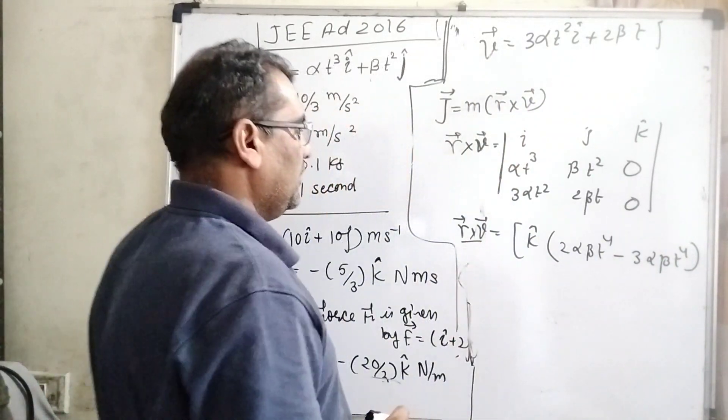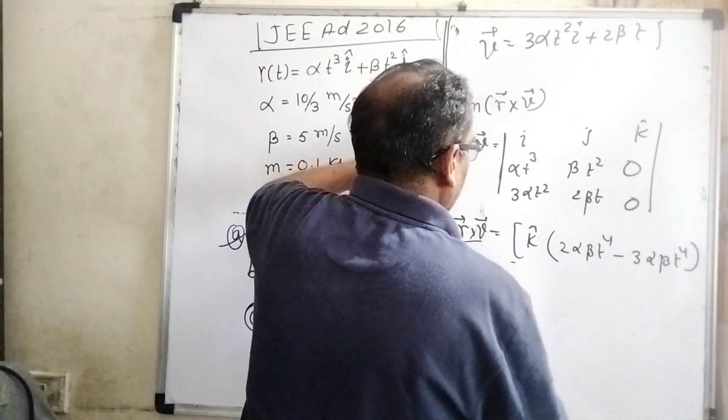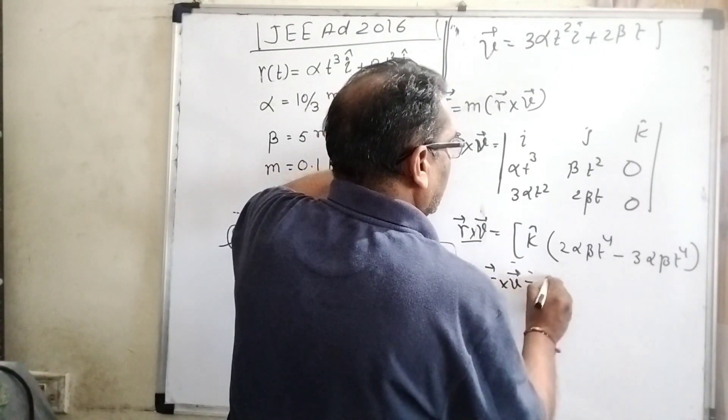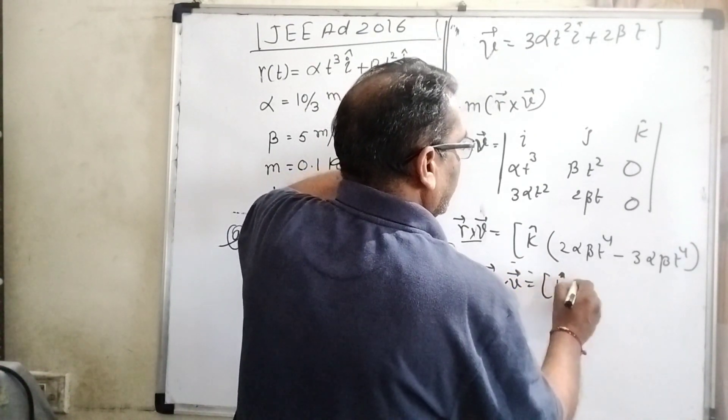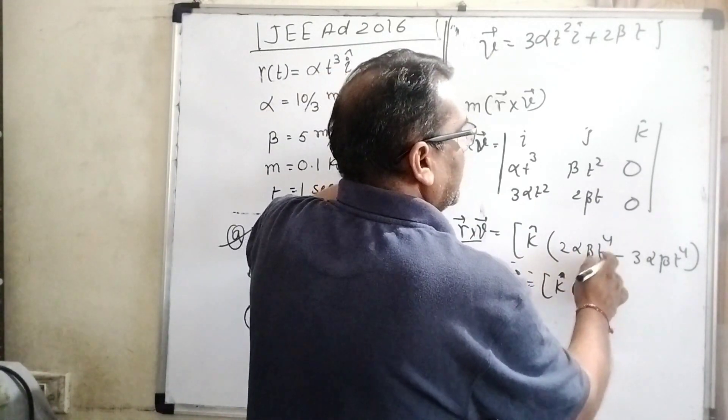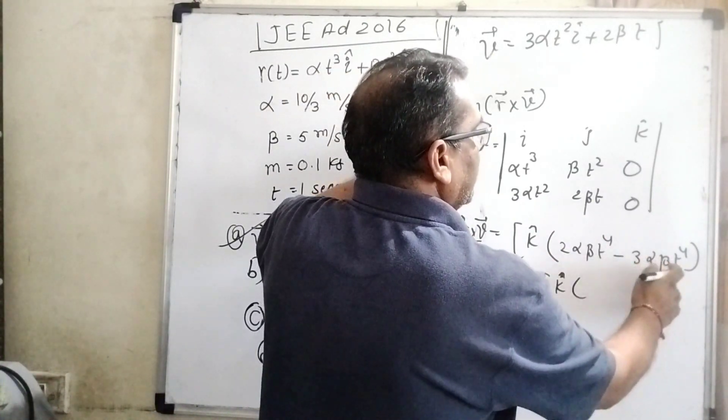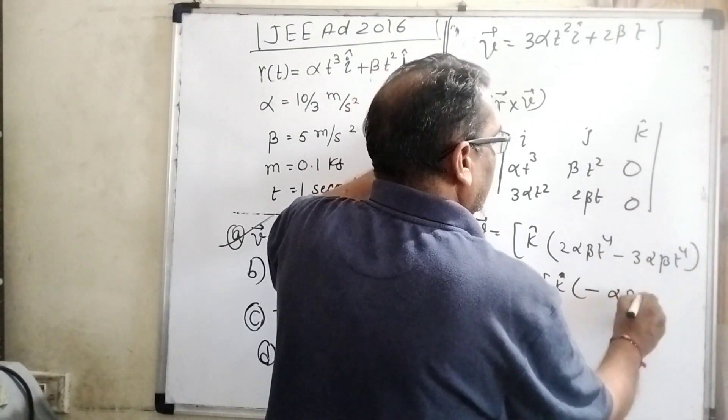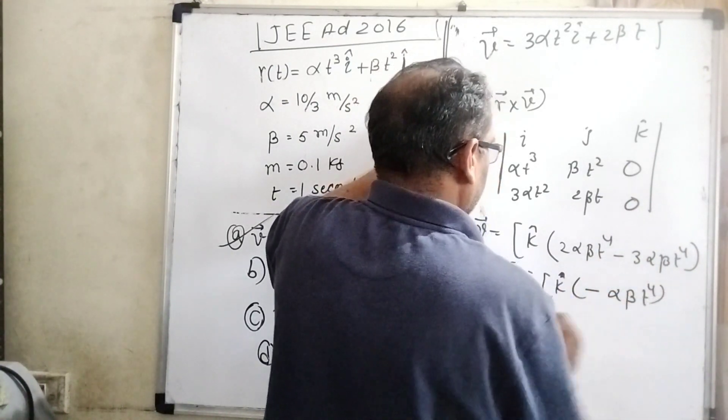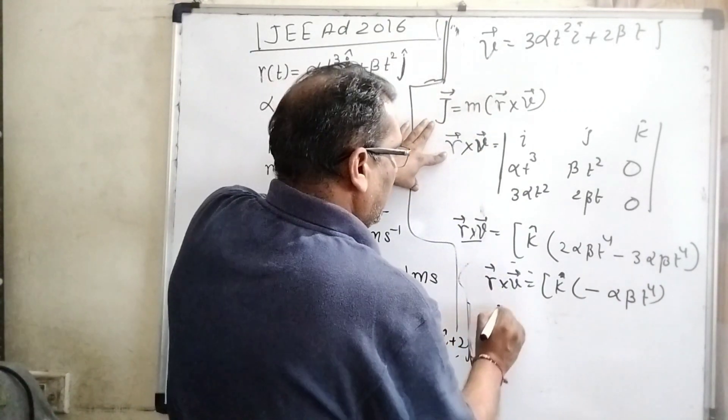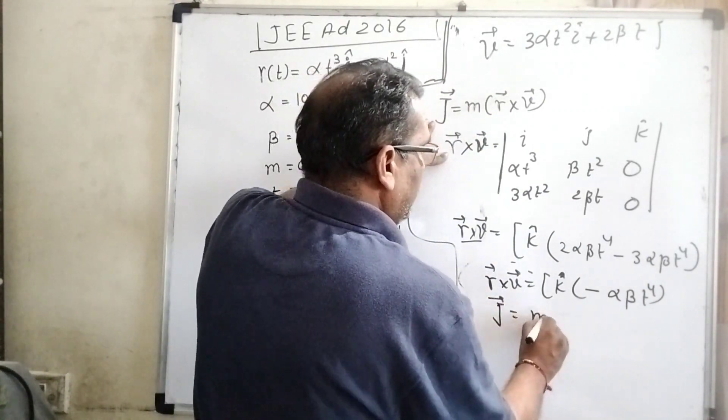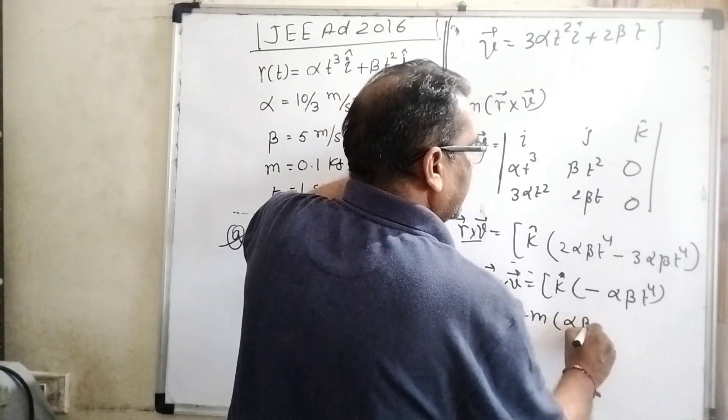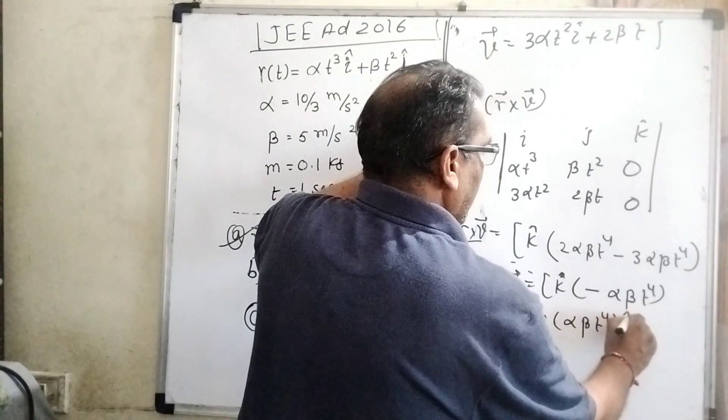Then our total overall value r cross v equals k vector, k cap: 2αβ t⁴ minus 3αβ t⁴, which is minus αβ t⁴. Then overall value of angular momentum is m into minus αβ t⁴ k cap.